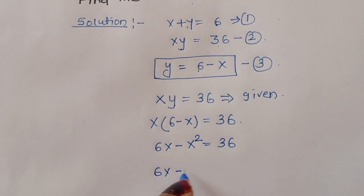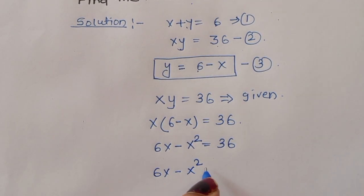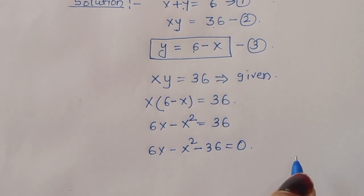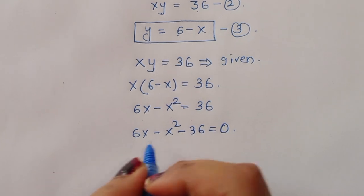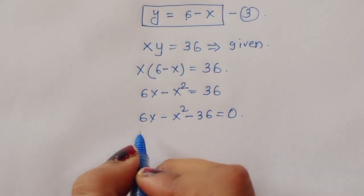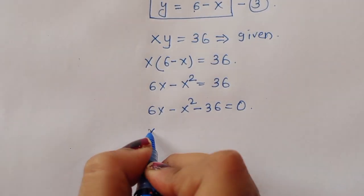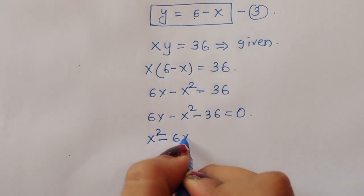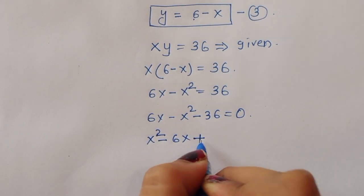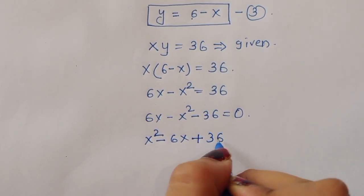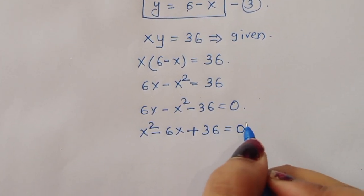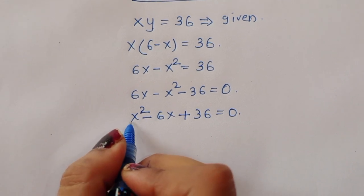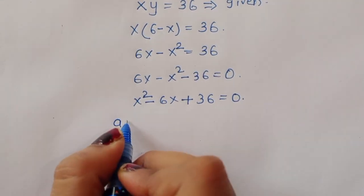Expanding: 6x minus x squared equals 36. Rearranging: 6x minus x squared minus 36 equals 0. Multiplying through by minus 1, we get x squared minus 6x plus 36 equals 0.